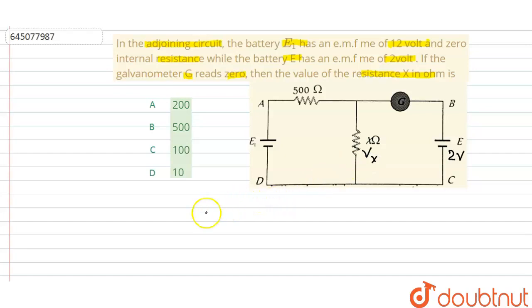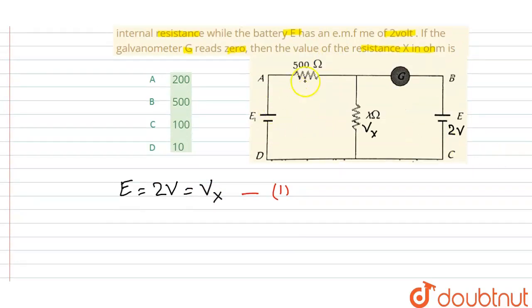So here I can write that this EMF, that is 2 volts, equals the voltage across the resistance X ohms. Let us mark this as equation number one. Now in this part, this voltage of 12 volts gets divided across the resistances.